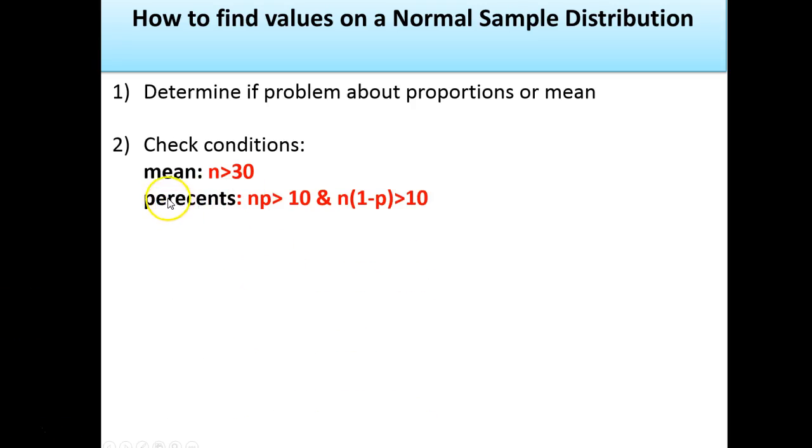And if it's a percent or proportion, I just need to know that n sample size times that percent is greater than 10, or n times 1 minus p is greater than 10. That's 10 successes, 10 failures. Once I have done this, I've checked my conditions. I can use a normal curve, which is awesome.